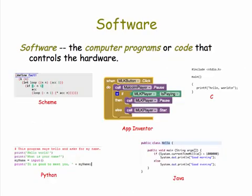Software are the programs or code that control the hardware. For example, your I Have a Dream app controlled the speaker of the device and it told it to play a recording of Martin Luther King.